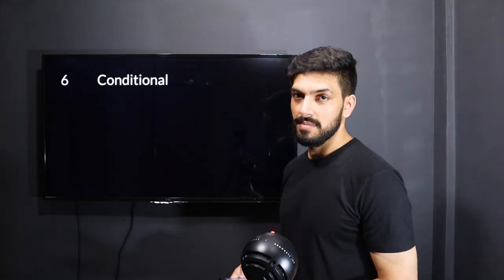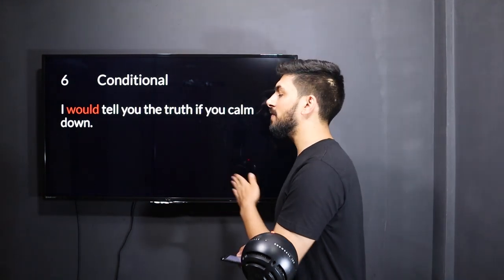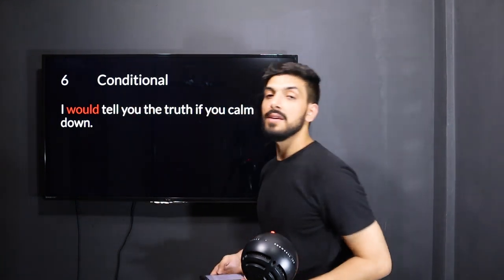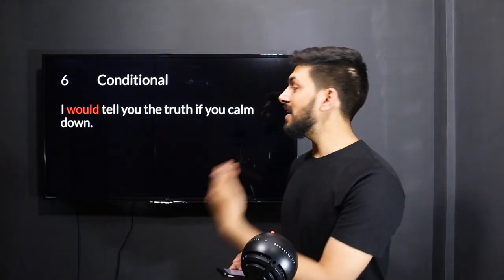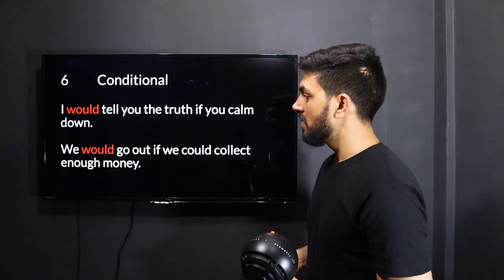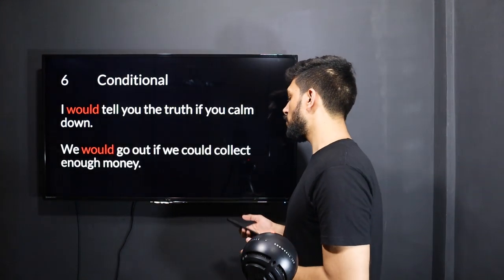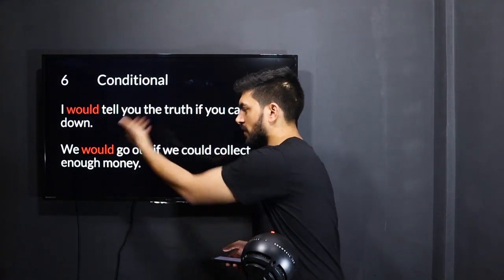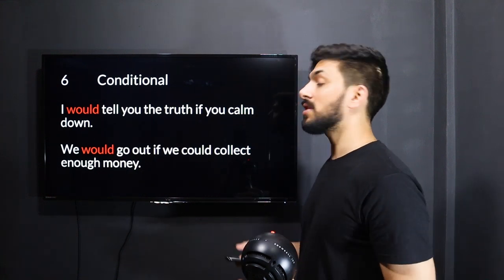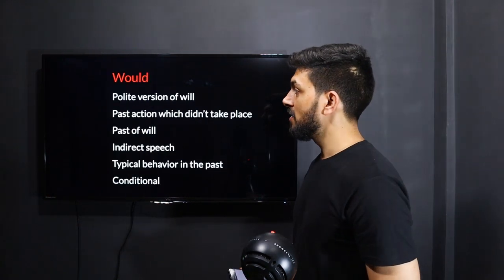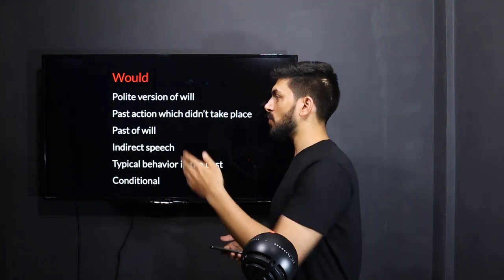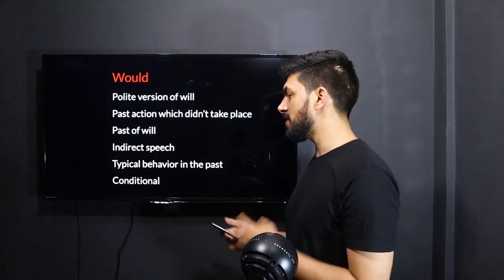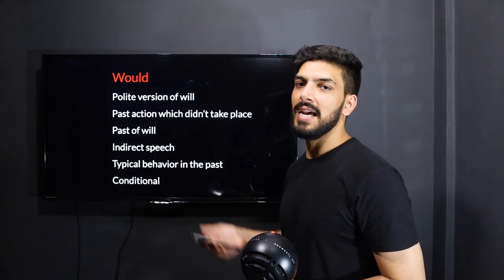The sixth use is conditional sentences. For example: 'I would tell you the truth if you calm down' — the condition is 'if you calm down,' and the output is telling the truth. 'We would go out if we could collect enough money.' So for would, we covered: polite version of will, past action which didn't take place, past of will, indirect speech, typical behavior in the past, and conditional sentences.